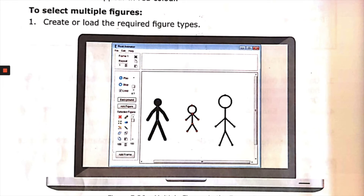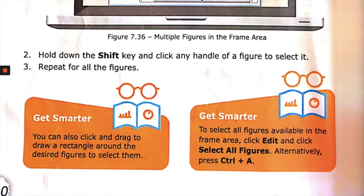To use multi-figure selection, create or load the required figure types into your frame area, as shown in figure 7.36. Hold down the Shift key and click any handle of a figure to select it; repeat for all figures. You can also click and drag to draw a rectangle around the desired figures to select them. To select all figures in the frame area, click Edit and click Select All Figures.